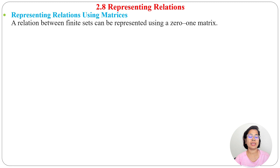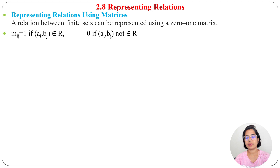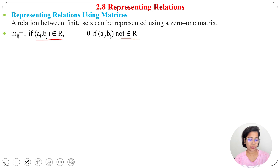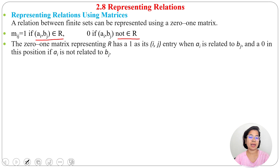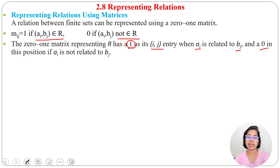If there is a relation, it will be 1, else it will be 0. So Mij equals 1 if (Ai, Bj) belongs to R, and it will be 0 if it doesn't belong to R. The 0-1 matrix representing R has a 1 in its (i,j) entry when Ai is related to Bj, and 0 when Ai is not related to Bj.